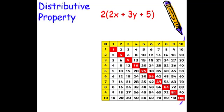When multiplying over addition and subtraction is okay. 2 times 2x is 4x, 2 times 3y is plus 6y, and 2 times 5 is plus 10.